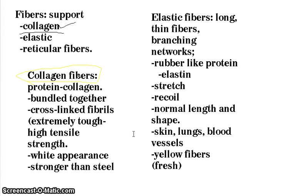Elastic fibers are long and thin, forming branching networks. Their protein is elastin — a rubber-like protein. They have the properties to stretch and recoil, returning tissue to its normal length and shape. They are found in the skin, lungs, and blood vessels, and they appear yellow in color.